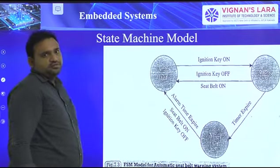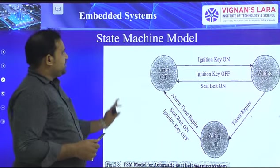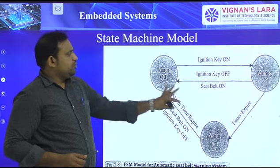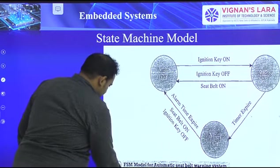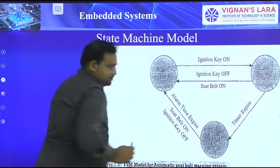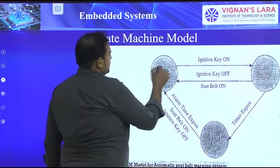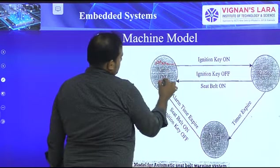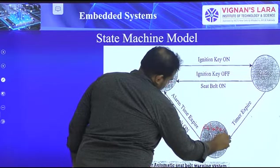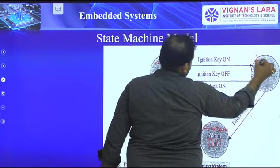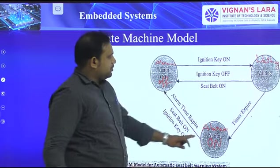The third model is the state machine model — a finite state machine, which we also study in digital electronics. For the state machine model, I have taken an example: the FSM model for an automatic seat belt warning system. Consider an automobile — a car. There are three states: alarm off, alarm on, and waiting. The first event is ignition key on.